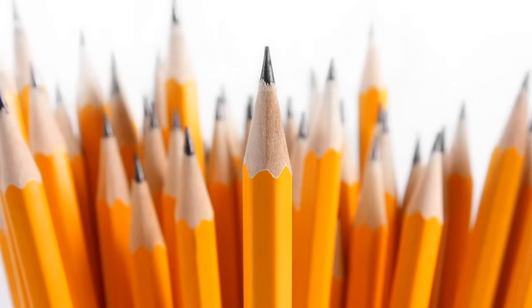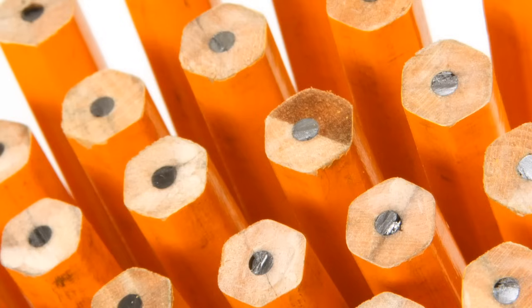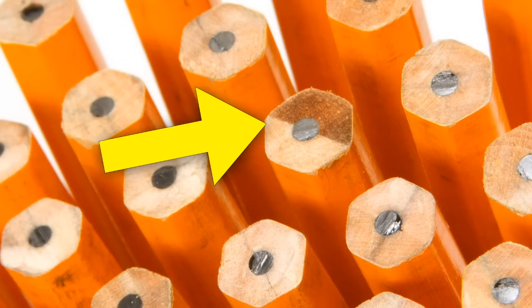Now, pencils today look very different, but they're still made the same way. If you look closely at an unsharpened pencil, you can see they're still sandwiches of wood and graphite. Have you ever noticed how some pencils look like they have a little line through them? That's because two pieces of wood were glued together and you can see where they meet.